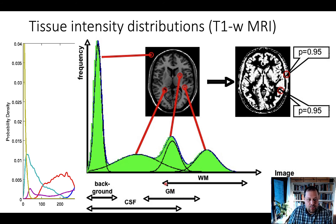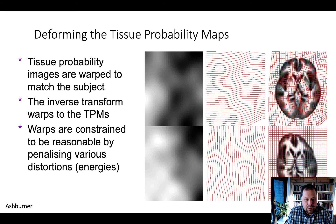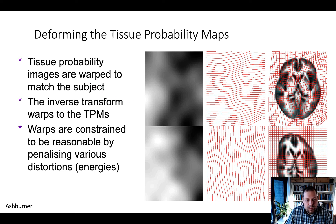White matter regions fall under one distribution, gray matter under another with some overlap, and CSF has its own distribution that can be identified within the image during segmentation. This gives a probability that each voxel belongs to some class. SPM then uses the tissue probability maps and warps them to the subject-specific T1 or anatomical scan to get the best match between each tissue probability map and the subject's anatomical scan.